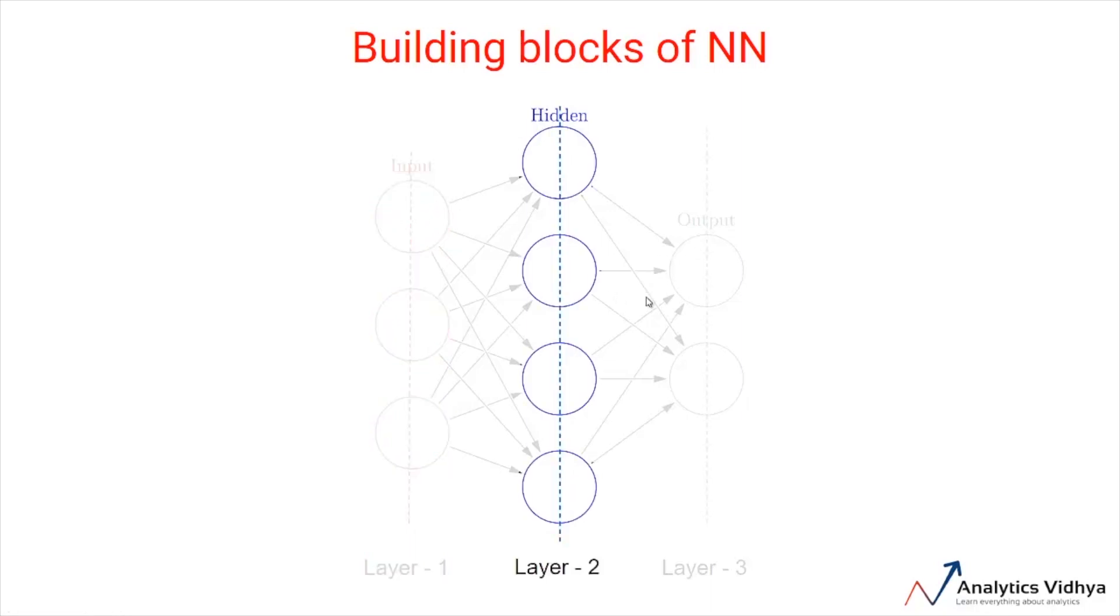The second type of layer is called the hidden layer. Hidden layers are either one or more in number for a neural network. Here, in this case, the number is one.